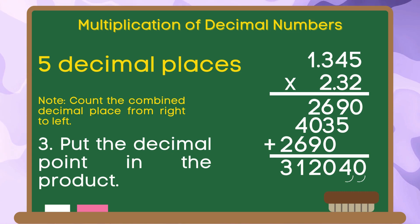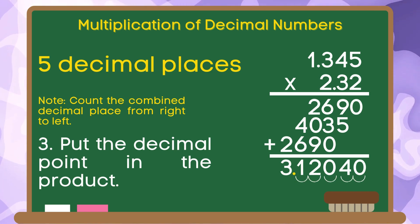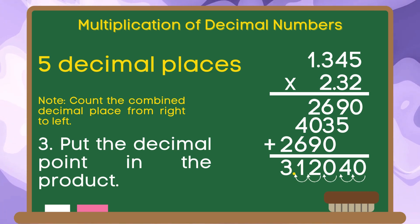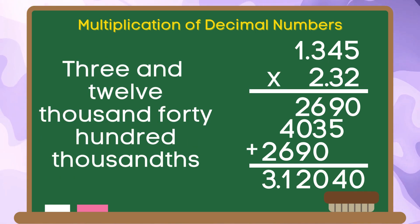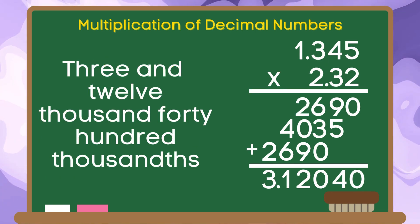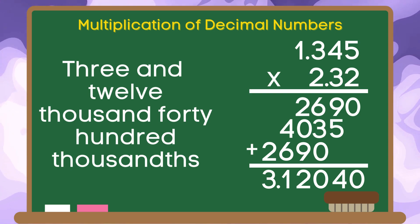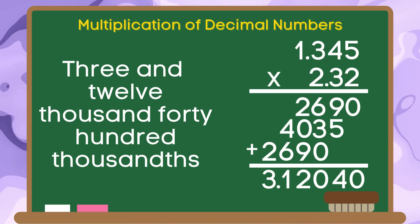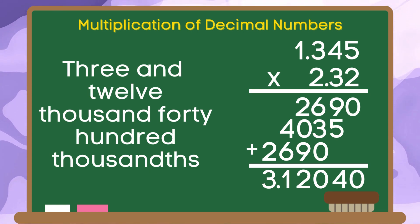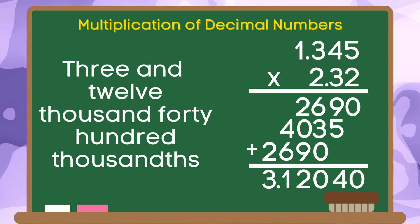1, 2, 3, 4, 5. The decimal point in our product is in between 3 and 1. Therefore, the product of 1 and 345 thousandths and 2 and 32 hundredths is 3 and 12,040 hundred-thousandths.